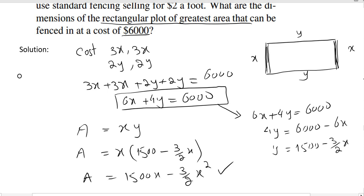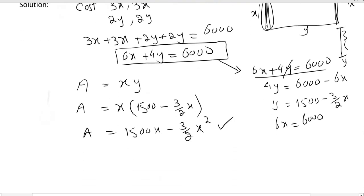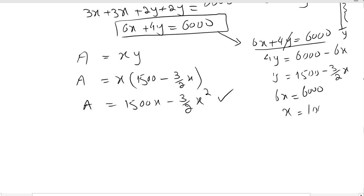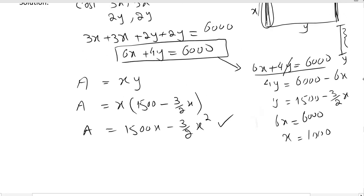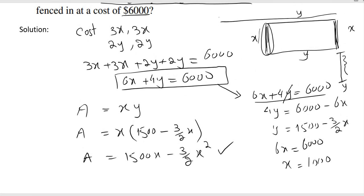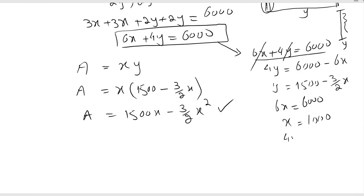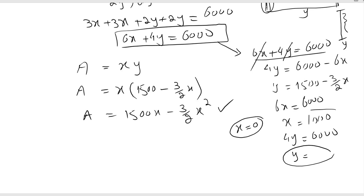Since the function is in terms of x, we need limits on x. The maximum x can be is when y equals 0; substituting into 6x equals 6000 gives x equals 1000. The minimum value of x is 0, since length cannot be negative. So x belongs to the interval [0, 1000].